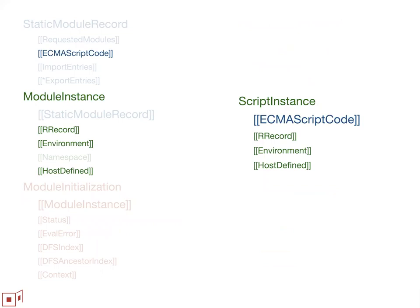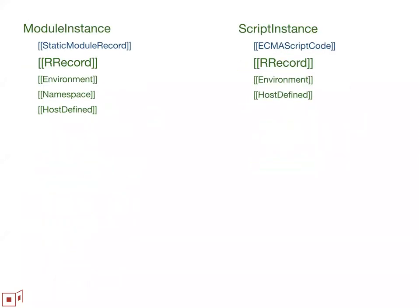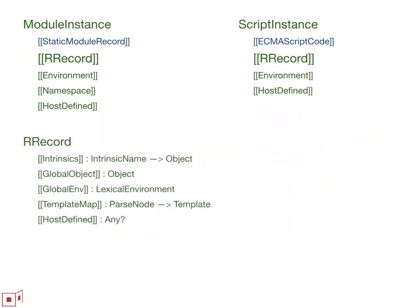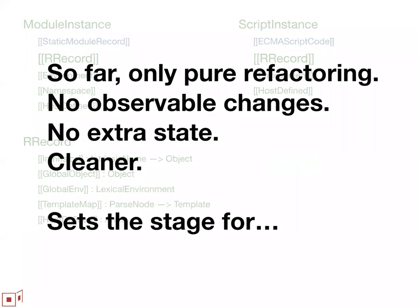The module instance preserves the parallelism with what is currently in the spec called the script record — renamed here for parallelism as the script instance — which has the same kind of duality. All of the remaining interesting action in terms of state that affects execution is in the R record. So far, all of these steps are pure refactoring: no semantic changes, no observable changes, no extra state. It's exactly the same state variables, just relocated.